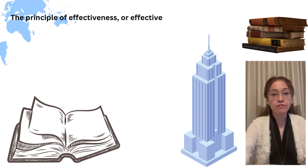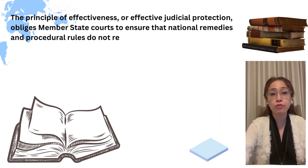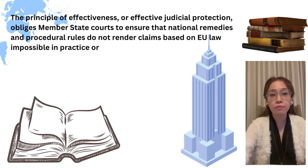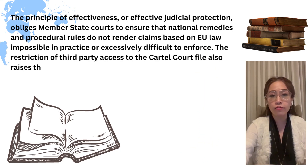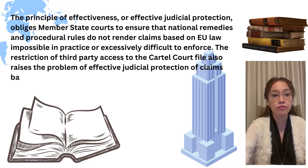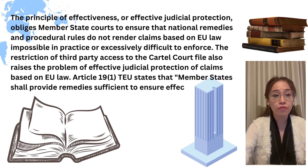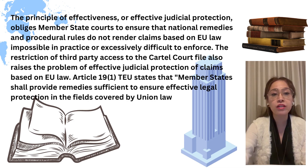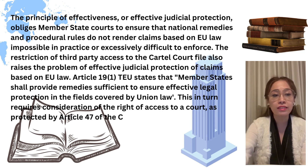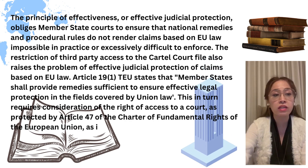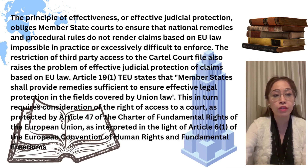The principle of effectiveness, or effective judicial protection, obliges member state courts to ensure that national remedies and procedural rules do not render claims based on European law impossible in practice or excessively difficult to enforce. The restriction of third-party access to the cartel court file also raises the problem of effective judicial protection of claims based on European law. Article 19, Section 1 states that member states shall provide remedies sufficient to ensure effective legal protection in the fields covered by Union law. This requires consideration of the right of access to a court as protected by Article 47 of the Charter of Fundamental Rights of the European Union, as interpreted in the light of Article 6 of the European Convention of Human Rights and Fundamental Freedoms.